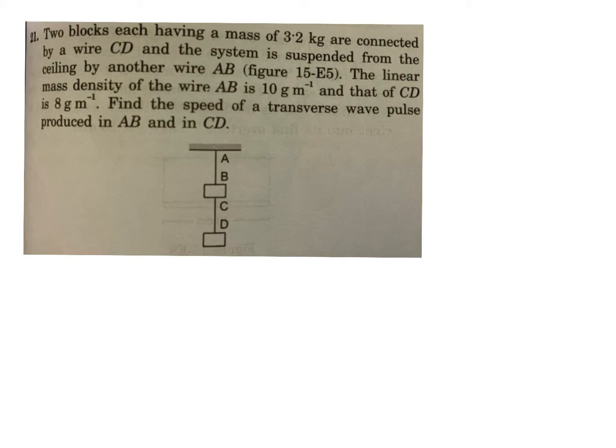First, two blocks each having mass 3.2 kg. Each block has mass 3.2 kg, which means the force is 32 newtons or the weight is 32 newtons for each block connected by wire CD. We need to find the linear mass density of AB and that of CD, and the speed of transverse wave pulse.